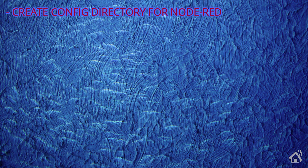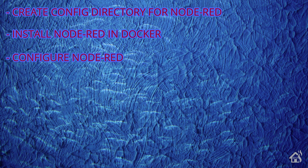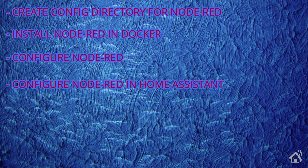That's the end of the video guys. We went through, set everything up, got it all working and communicating with Home Assistant, and it went pretty smooth. Let's do a quick run through everything we covered: we created our config directory for Node-RED, installed Node-RED in Docker, did some configuration from within Node-RED, did some configuration in Home Assistant for Node-RED, created our first automation for Home Assistant, and lastly I showed you what that looked like in action.